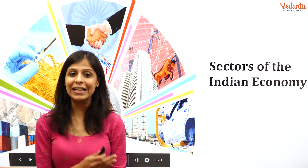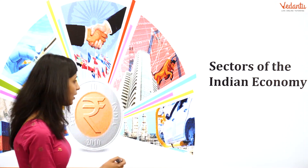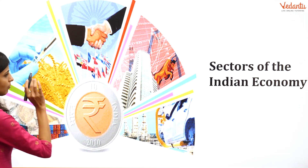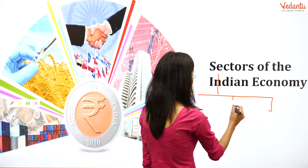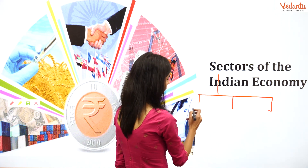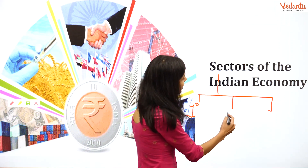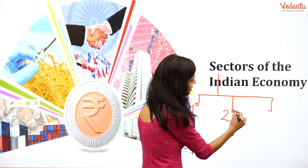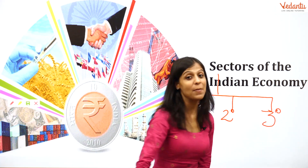Sectors of the Indian economy. This is a very basic chapter. There are three basic sectors in the Indian economy: the first is the primary or agricultural sector, the second is the manufacturing or industrial sector, and the third is the tertiary sector, also called the service sector.